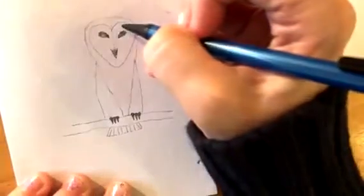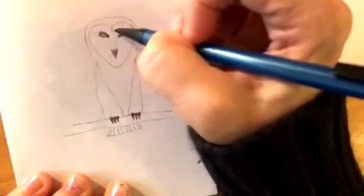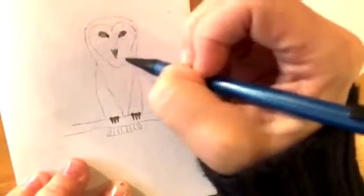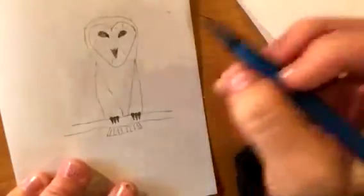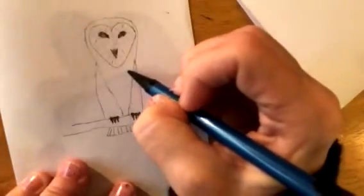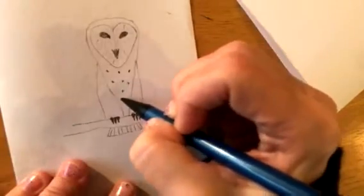Now around the eyes, I'm just going to make a few little lines here, just so you get the impression of some feathering. And on the chest, I'm just going to make some dots, random fat dots.